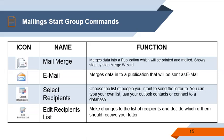Here are the Mailing Start Group commands for you to be familiar with the icons — the name and function of each icon. For Mail Merge, this will merge data into a publication which will be printed and mailed, as shown on the Step-by-Step Merge Wizard. Next, Email Merge — merge data into a publication that will be sent as email. Next, Select Recipients — choose the list of people you intend to send the letter to; you can type your own list, use your Outlook contacts, or connect to a database. And lastly, Edit Recipients List — make changes to the list of recipients and decide which of them should receive your letters.